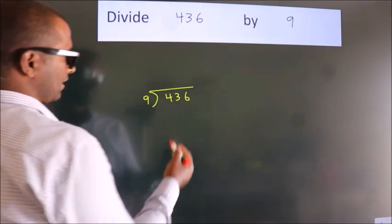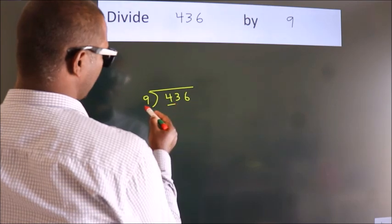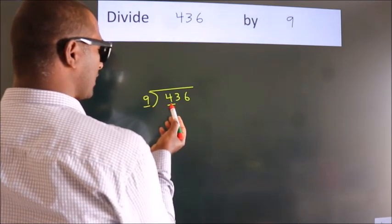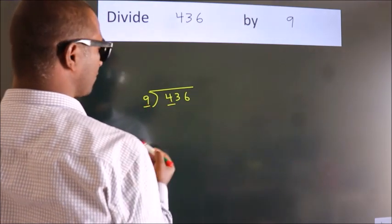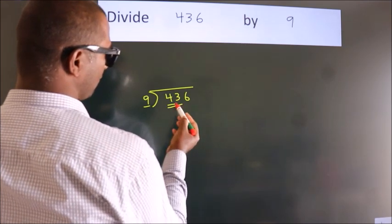Next, here we have 4. Here 9. 4 is smaller than 9, so we should take 2 numbers: 43.